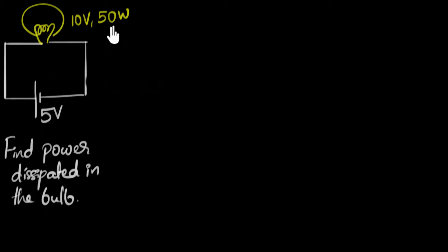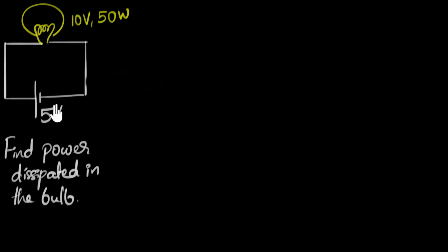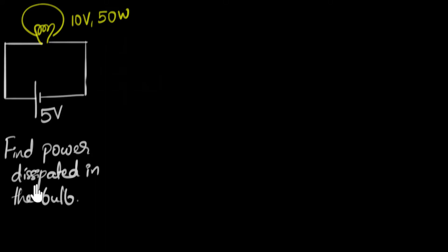We have a bulb of 10 volt 50 watt rating connected across a five volt battery. We are asked to calculate the power dissipated in the bulb. When I saw questions like this for the first time where a bulb rating was mentioned, I used to always get confused. My main confusion was: we're already given the power of the bulb as 50 watts, and we're again asked to find the power dissipated in the bulb.